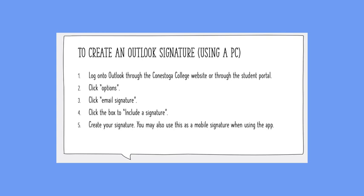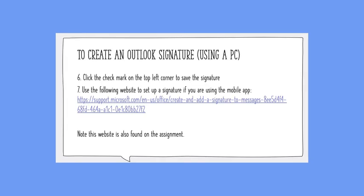To create an Outlook signature using a PC, log on to Outlook through the Conestoga College website or the student portal. Then click on Options, click Email Signature, click the box to include a signature, and create your signature as shown. Once you've created your signature, click the check mark in the top left corner to save it. You can also use the website listed here if you are on the mobile app to create your signature. This website is also found on the Word document under Assignments.